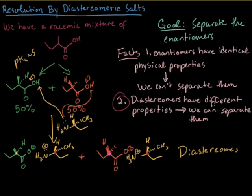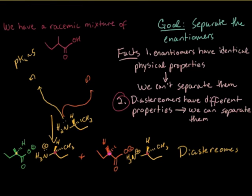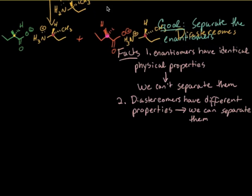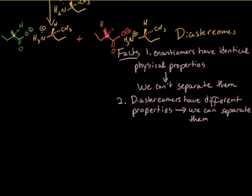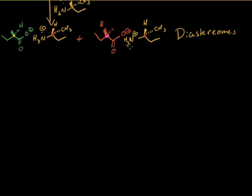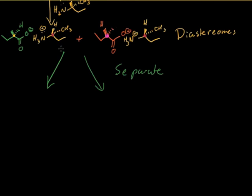And now we go back to fact two: diastereomers have different physical properties, so we can separate them. They're now easy to separate. That just means maybe the one on the left is more soluble than the one on the right, so if we try to crystallize them, the right one will form crystals more readily. The idea is they can be separated now that they're diastereomers.